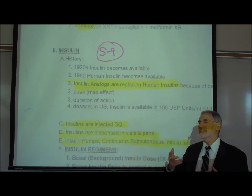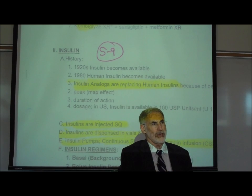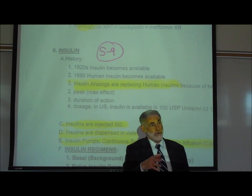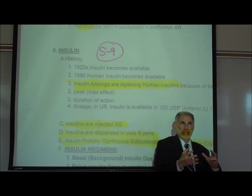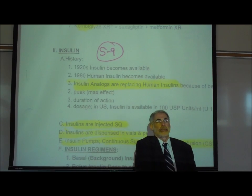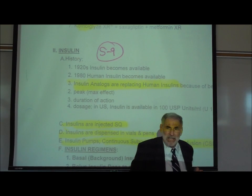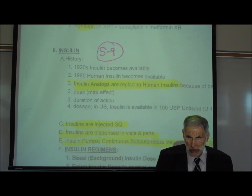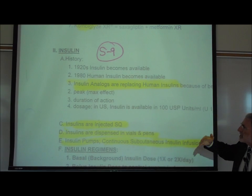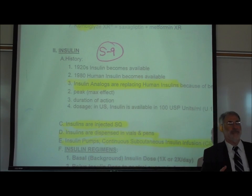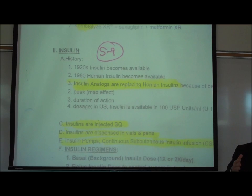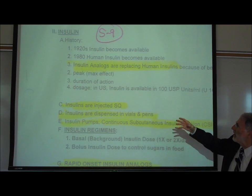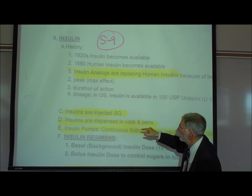Insulin is given by subcutaneous injection. Different kinds of insulin analogs have been created — some are absorbed rapidly into the bloodstream and some are absorbed more slowly. That becomes the basis of how we classify different insulins today, based upon their onset of action.